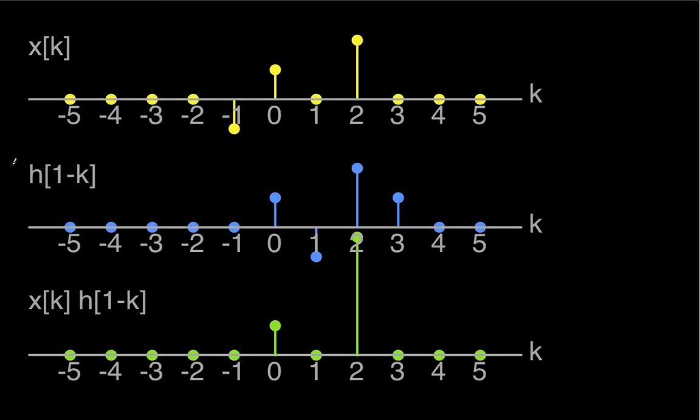So this is the case now where n is equal to 1. I've taken h of k, taken h of minus k and shifted it to the right by 1. And now the points where non-zero things line up, I have at k is equal to zero, one times one, which is this guy. I have zero times negative one, which is zero.